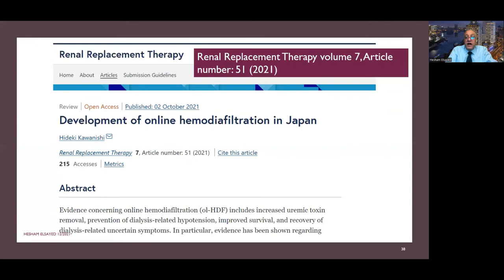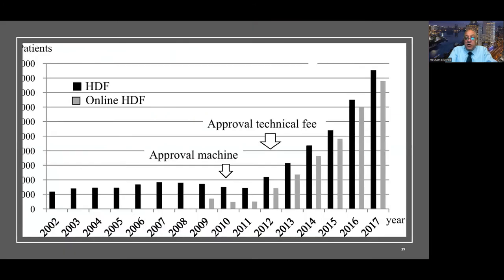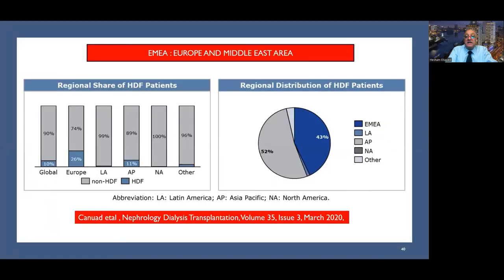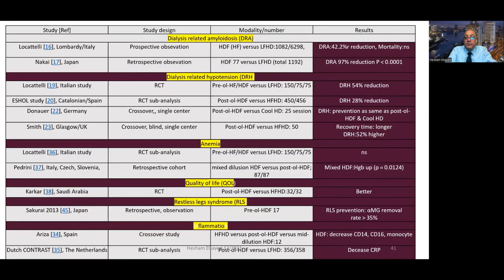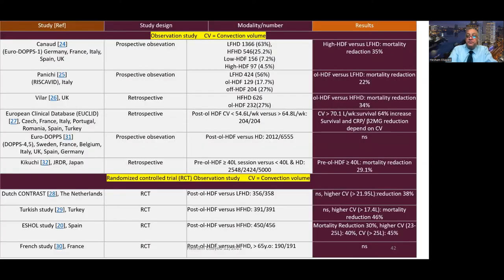The development of online hemodiafiltration in Japan has increased significantly over recent years, as well as in the Middle East and Europe. Clinical studies reveal improvements in dialysis-related amyloidosis, dialysis-related hypotension, anemia, quality of life, restless legs syndrome, and inflammation. Observational studies also show improvement in cardiovascular risk related to convection volume, with an overall decrease in mortality and morbidity.